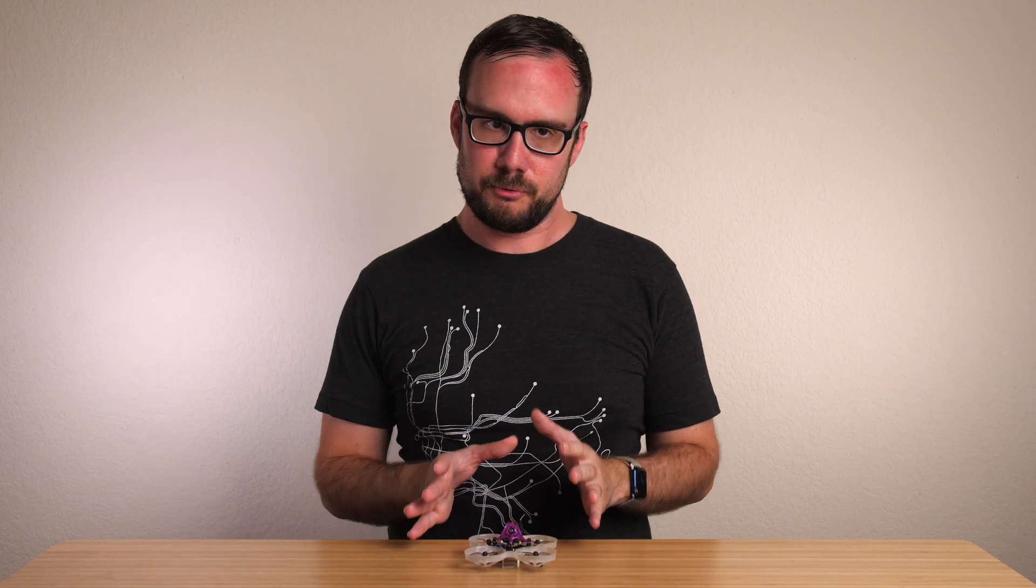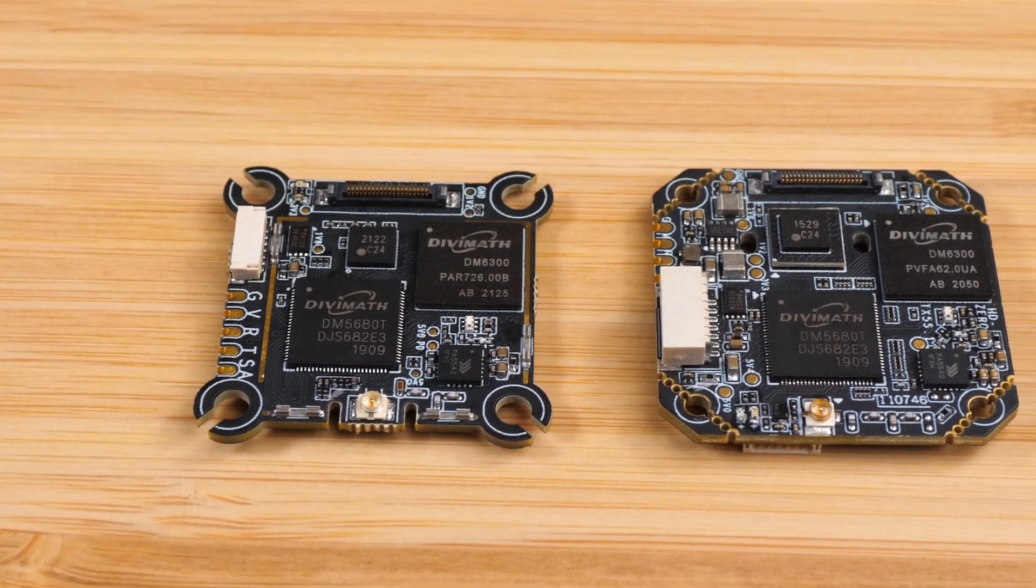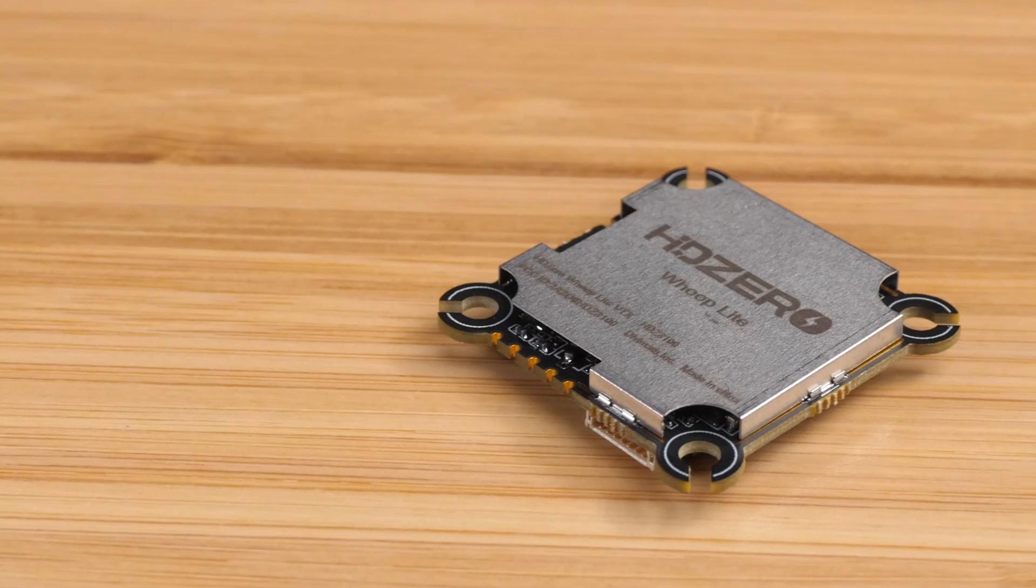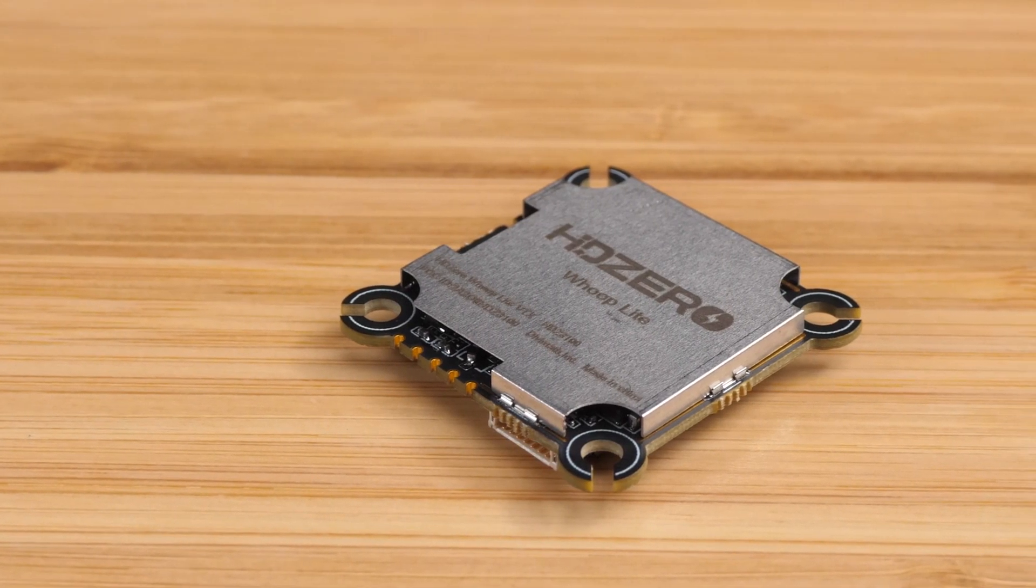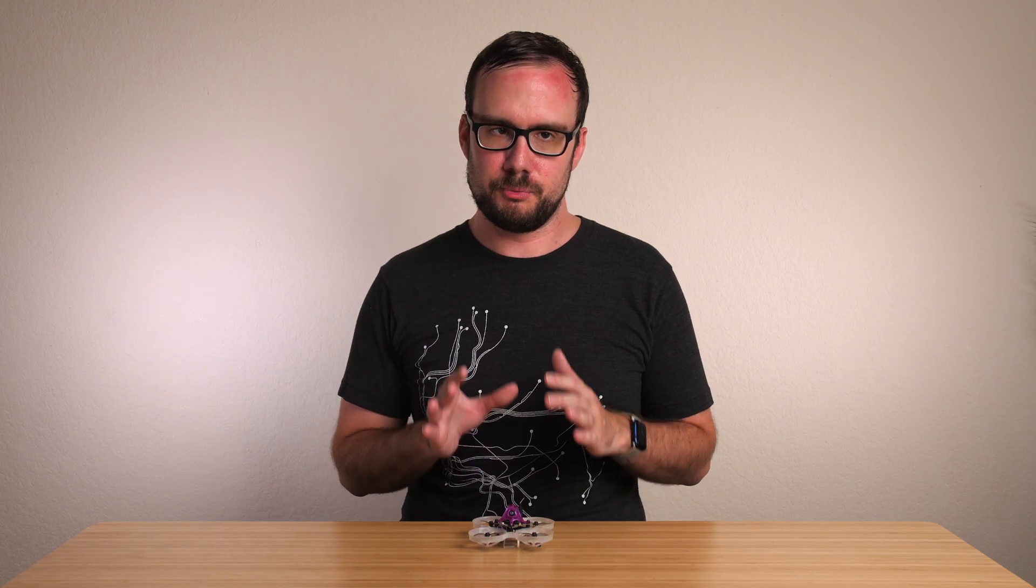So to sum all this up I think they've made some solid design improvements here. The Whoop Lite VTX is smaller and lighter than the previous Whoop VTX which is always a win. It's made to work with soft mounting and it has that optional metal shield for builds where the weight isn't critical. I think all those qualities are going to make this VTX more robust and durable than the previous Whoop VTX.